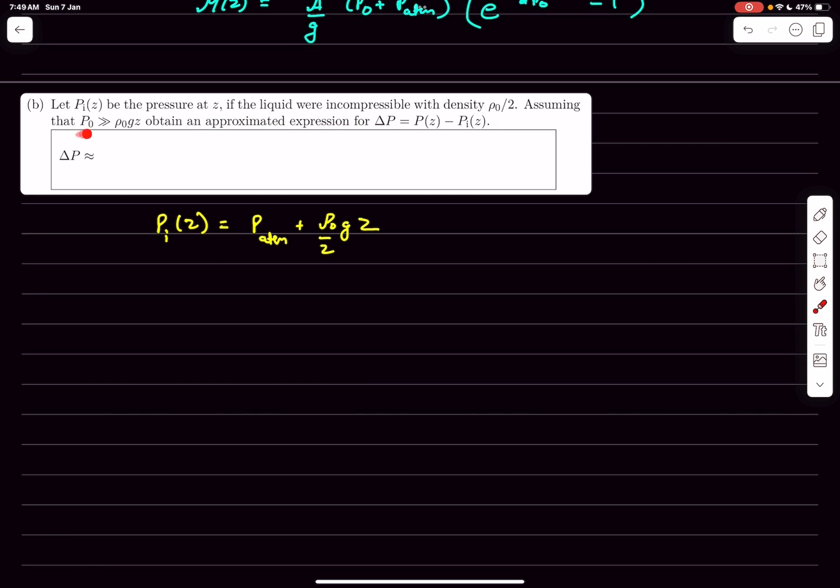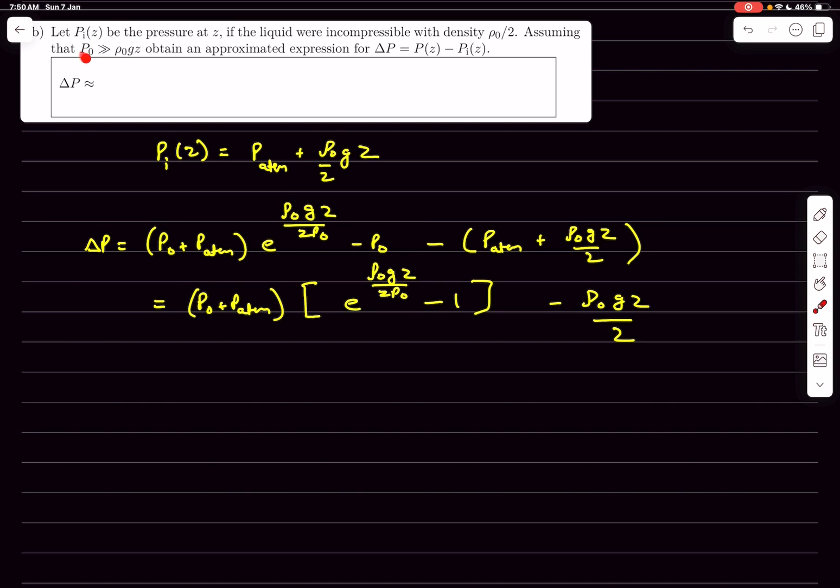And assuming that p0 is given to be much greater than ρ0gz, we have to obtain an approximated expression for ΔP. So let's write down ΔP first. Now this condition over here is just to ensure that the exponent over here is very small. So what we can do is write down the expansion for e^x. The expansion for e^x is 1 plus x plus x²/2!.